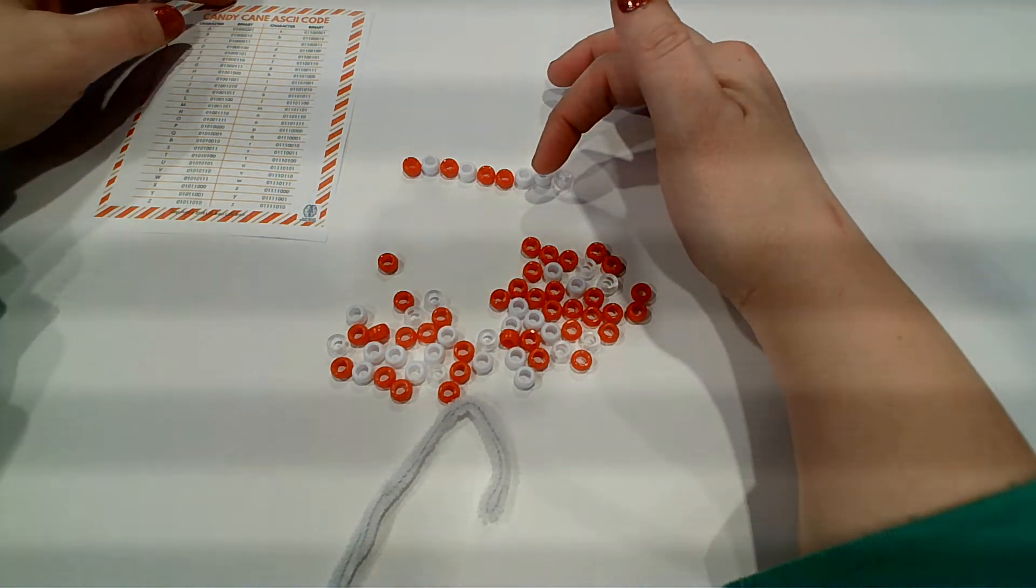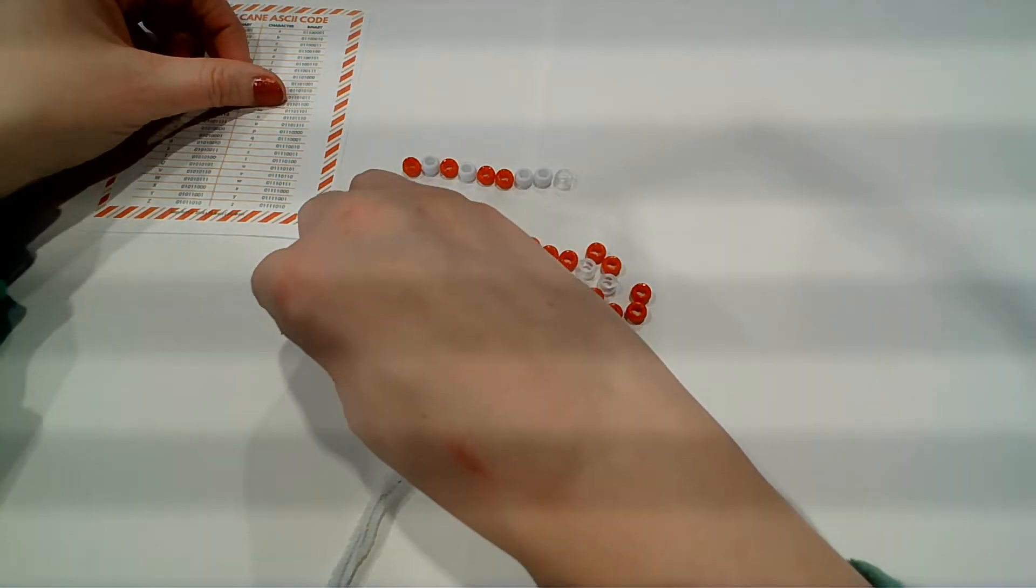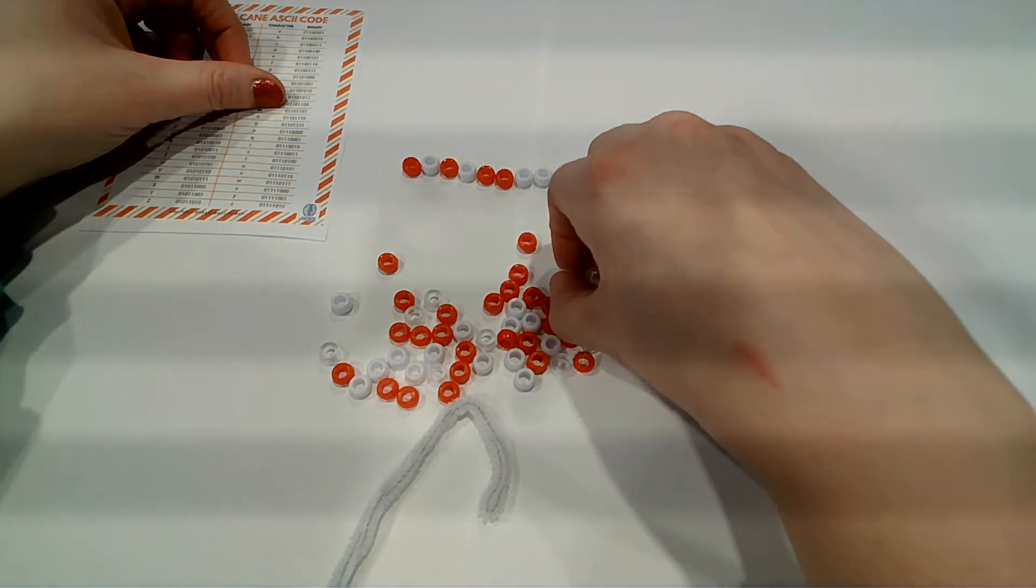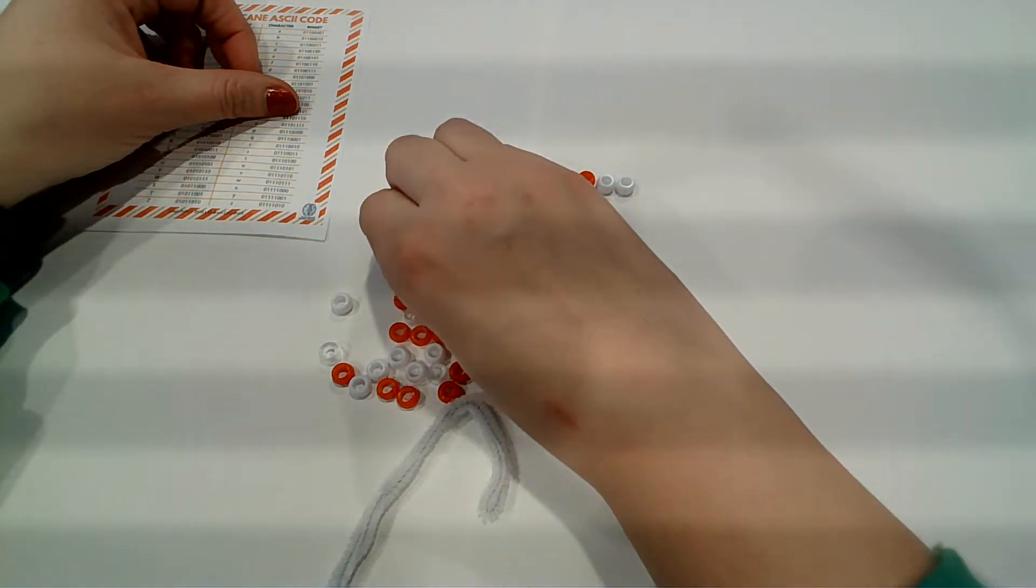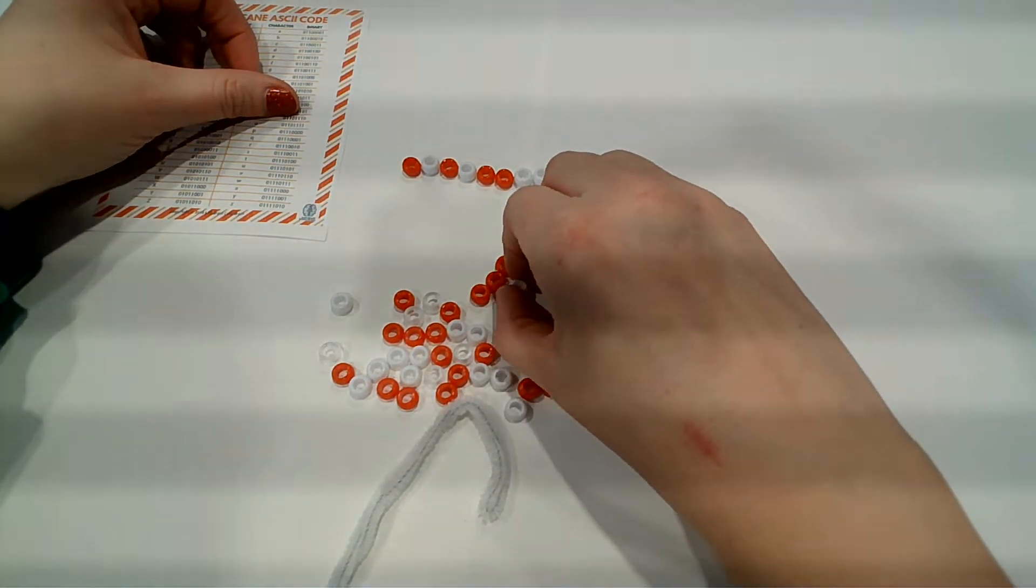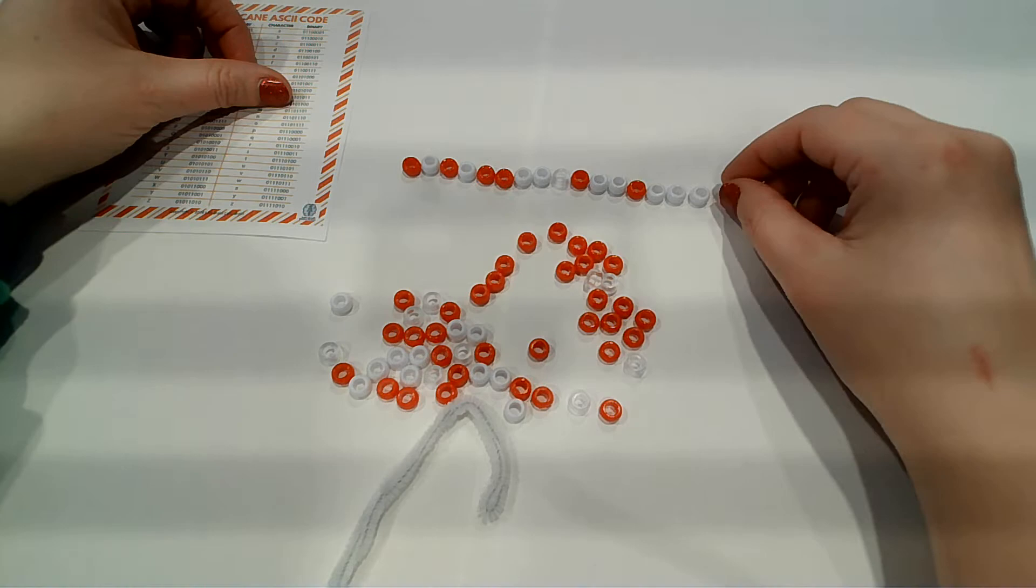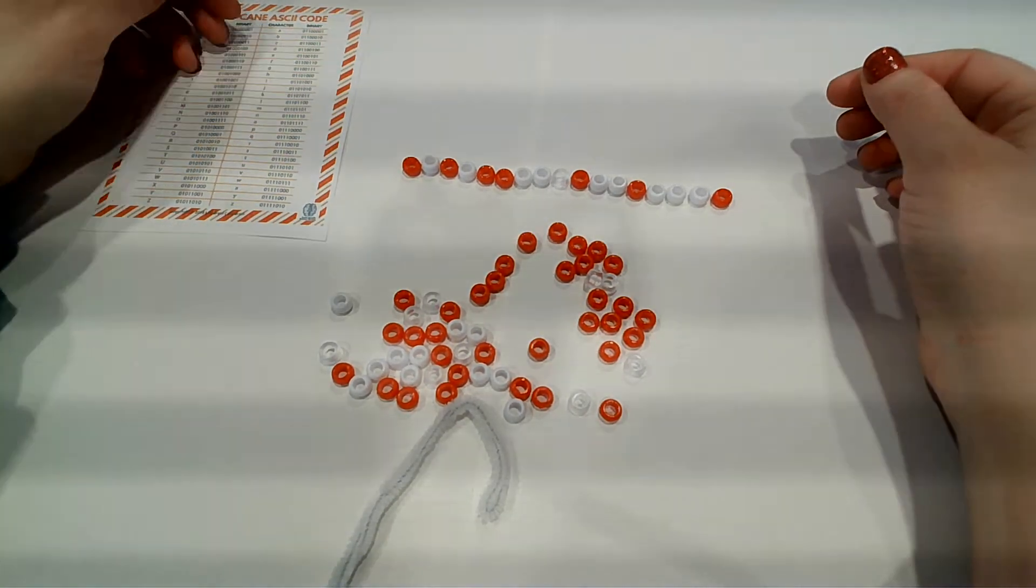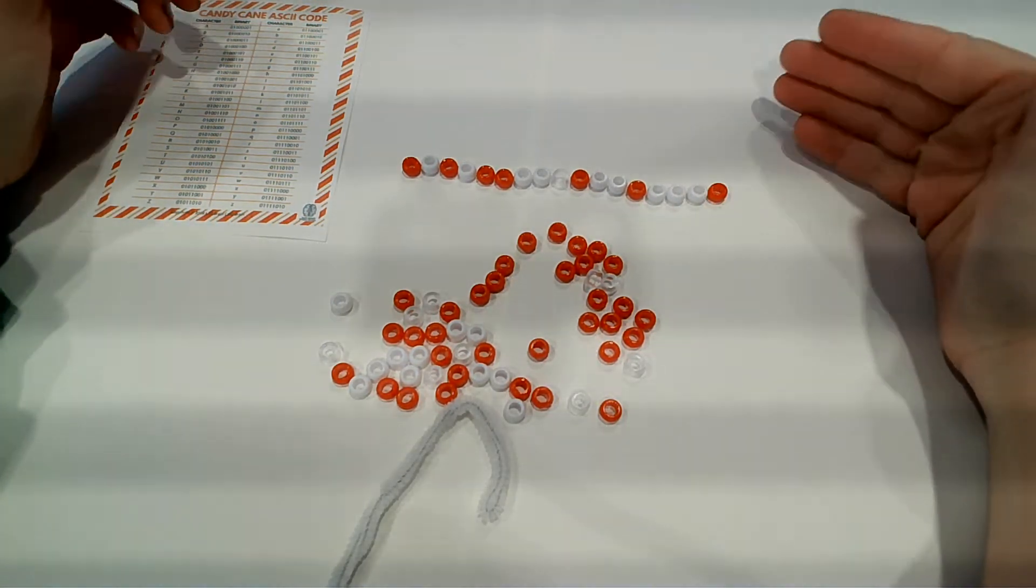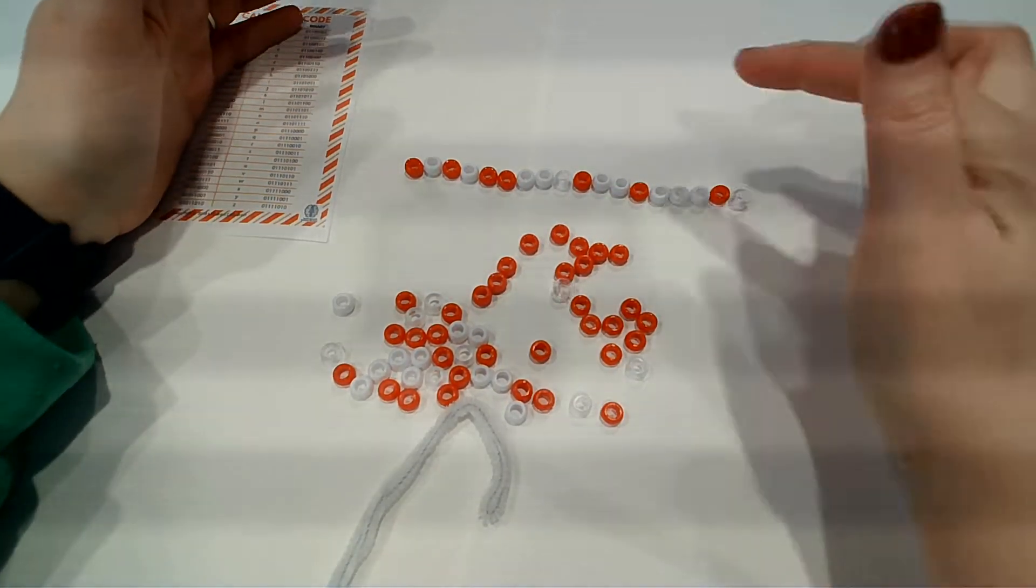So let's do a lowercase N. So we're going to do zero, one, one, zero, one, one, one, zero. So each letter has 8 either zeros or ones in there. So that's helpful. So then I'm going to use another spacer. So now I have S, N.